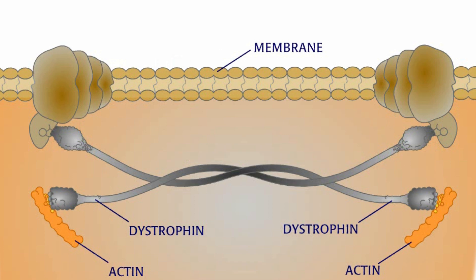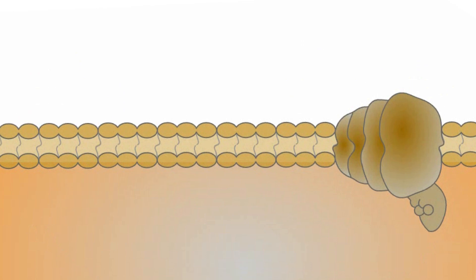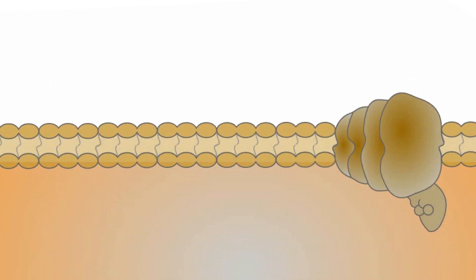Without dystrophin, vital connections between proteins in the cell membrane and other proteins inside the cell are lost. The cell membrane becomes weak due to these changes and can easily be ruptured.